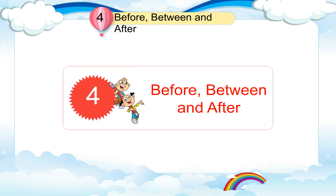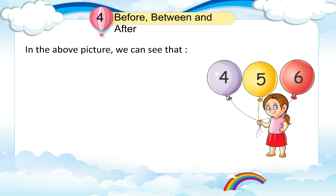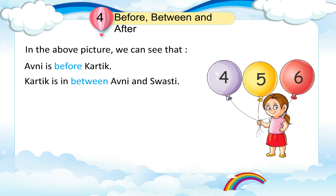Chapter 6: Before, Between and After. Avni, Kartik, Swasti. In the above picture, we can see that Avni is before Kartik. Kartik is in between Avni and Swasti.